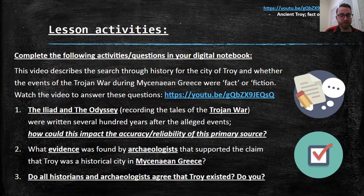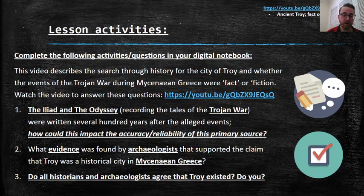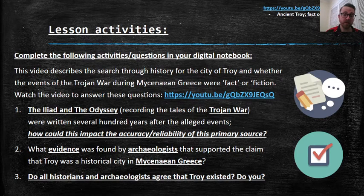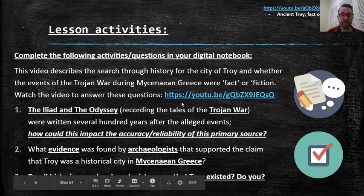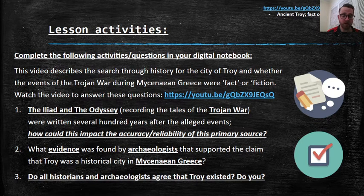Question two: What evidence was found by archaeologists that supported the claim that Troy was a historical city in Mycenaean Greece? There are some people who agree that it was a city and some who disagree. What evidence is discussed in the video, found by archaeologists, that supports the claim that Troy was a real city in Mycenaean Greece?